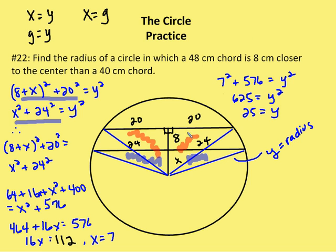Given that x is equal to 7, I see that I have a 7-24-25 triangle in this smaller triangle here. x is 7, one of my legs is 24, so my radius or my hypotenuse is going to be 25. So find the radius of a circle in which a 48-centimeter chord is 8 centimeters closer to the center than a 40-centimeter chord. And I said that real quickly. My radius ends up being 25. Okay, last problem.